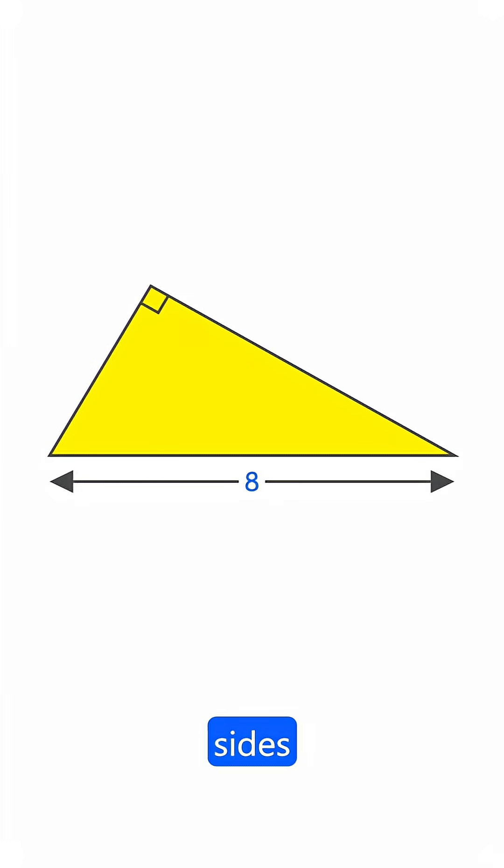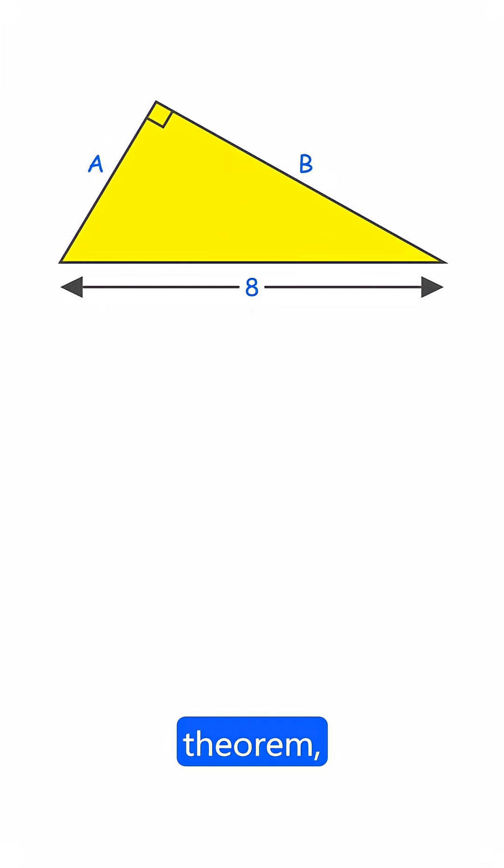Suppose the two perpendicular sides of the triangle are A and B. Using the Pythagorean theorem, A squared plus B squared equals 8 squared, that is 64.